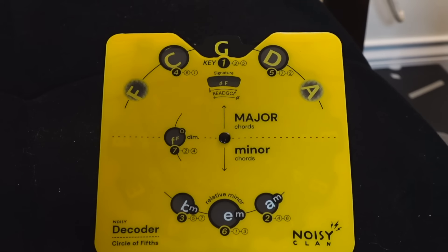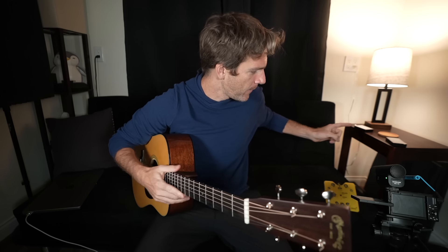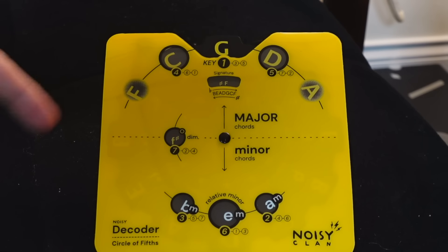It is this decoder circle of fifths wheel. I've always said that the circle of fifths is probably the most important thing to really fully comprehend, but it's a very confusing thing to actually teach because there are a lot of different moving parts at the same time. So we're going to talk about this NoisyClan decoder and how the circle of fifths can help you become a better musician.